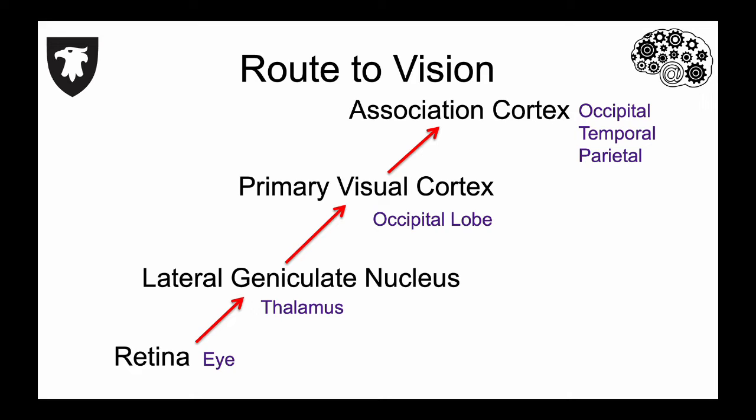This area is necessary for conscious visual perception, and it projects to association cortex in the occipital, temporal, and parietal lobes.